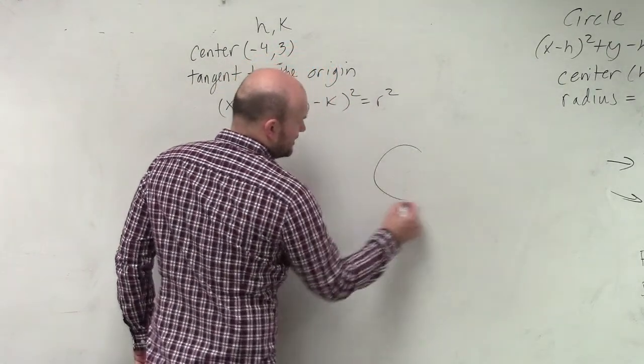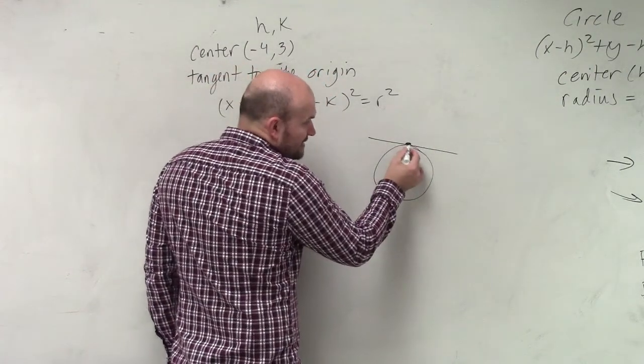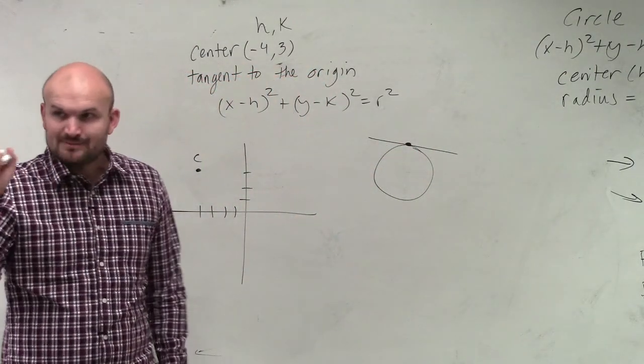It touches the origin at exactly one spot. If you guys remember, like tangent, like here's a line. Here's a line that's tangent to the circle. It intersects only at one exact point.